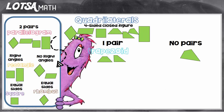We can narrow it down even more by asking: are its sides the same length? If a rectangle has sides of the same length, it's known as a square. A square can be called a rectangle, a parallelogram, or a quadrilateral — it has many names. If a parallelogram doesn't have right angles but does have equal sides, that's called a rhombus. A rhombus can be called a rhombus, a parallelogram, or a quadrilateral.